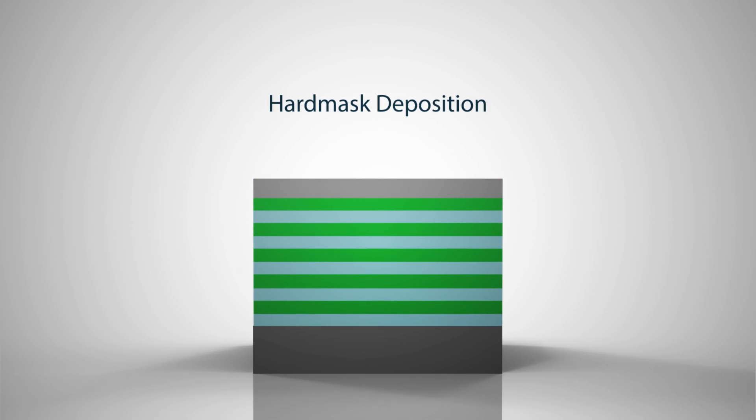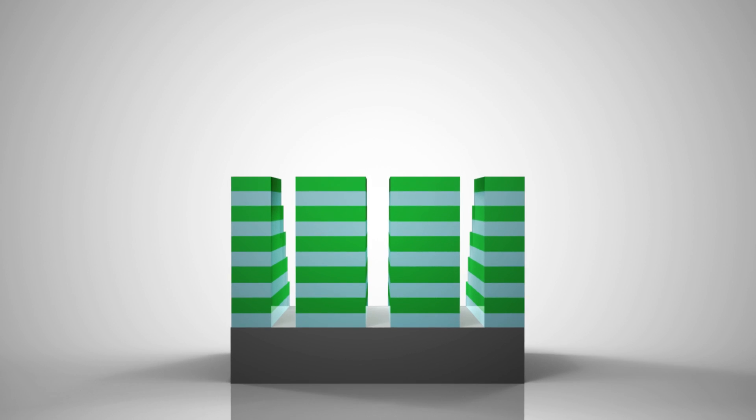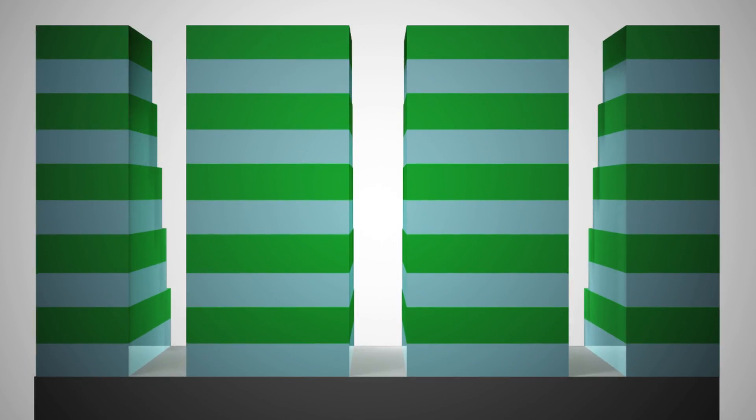To form the slits, a hard mask layer is deposited and openings are patterned. Slits are then etched to separate the columns of channel holes from each other, creating an array of memory cells.